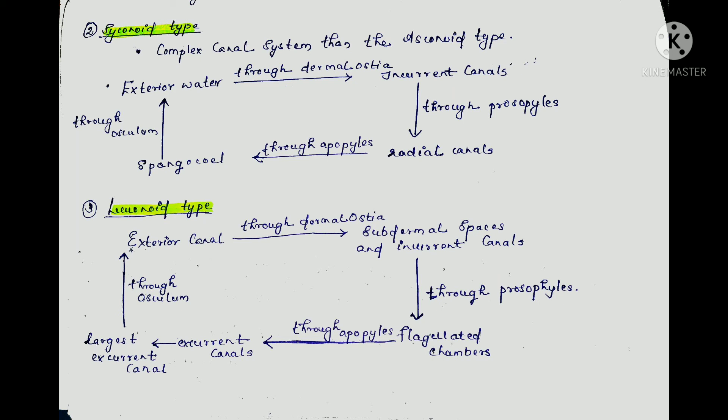The Sycon type is a complex type. Water enters through the ostia, moves through incurrent canals and prosopyles into radial canals lined with choanocytes, then into the spongocoel and out through the osculum. The Sycon canal system is a cylindrical body type — a little more complex than Ascon.